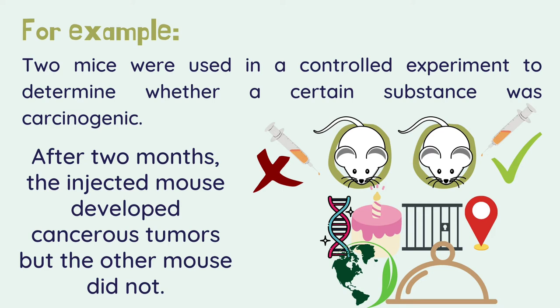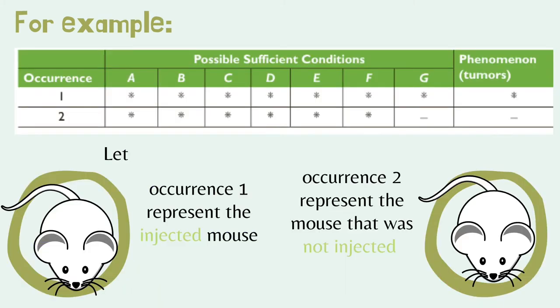The two mice had identical genes, the same age, were placed in identical cages in the same location, were subjected to the same environmental conditions, and were fed the same food over the same period of time. One mouse was injected with a suspected carcinogen and the other was not. After two months, the injected mouse developed cancerous tumors, but the other mouse did not.